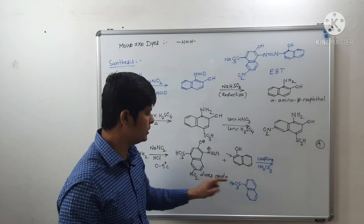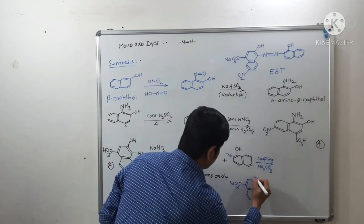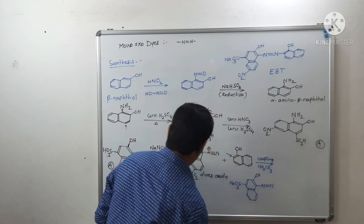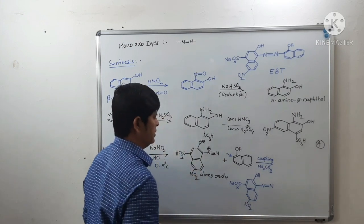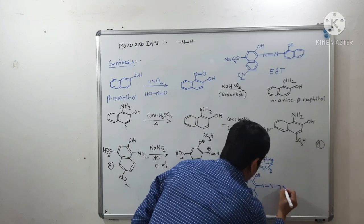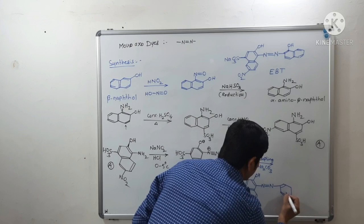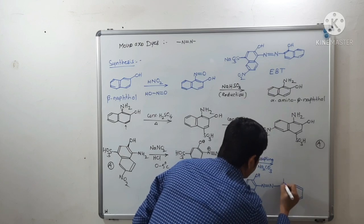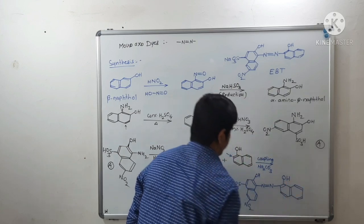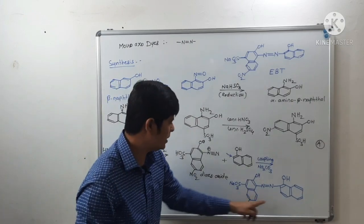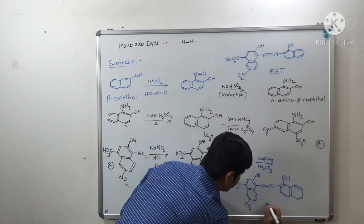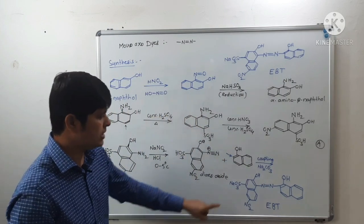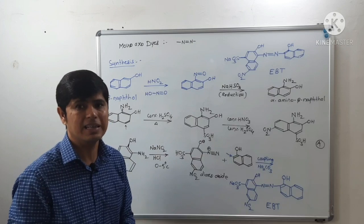The final structure of Eriochrome Black T includes a nitro group, the alpha-naphthol ring attached via the azo linkage, and the sulfonate group. This is EBT — Eriochrome Black T — synthesized in this way.